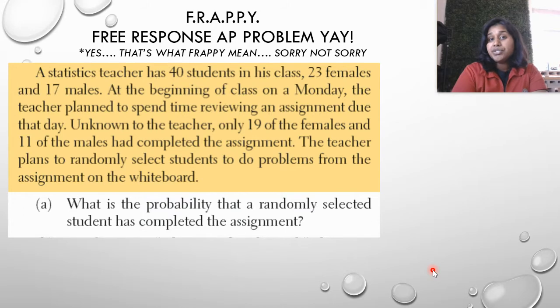A statistics teacher has 40 students in his class, 23 are female and 17 are male. At the beginning of class on Monday, the teacher planned to spend time reviewing an assignment due that day. Unfortunately, the teacher only had 19 of the females and 11 of the males complete the assignment. The teacher plans to randomly select students to do problems from the assignment on the whiteboard. Question A: What is the probability that a randomly selected student has completed the assignment?